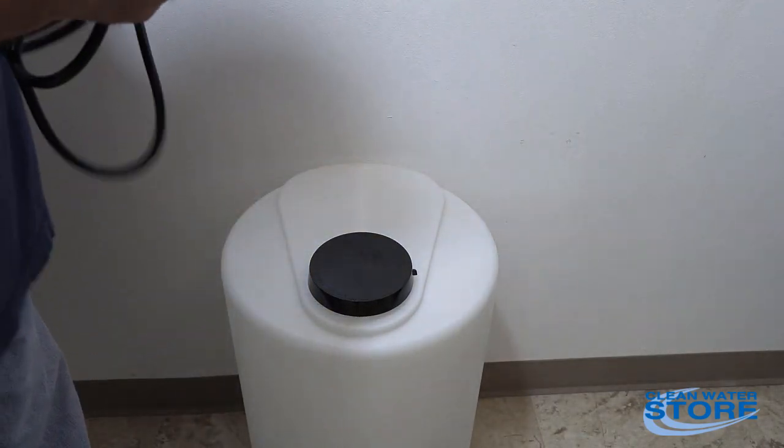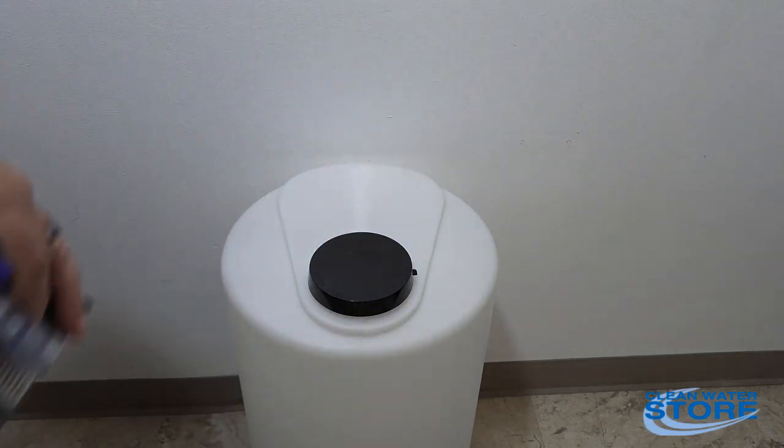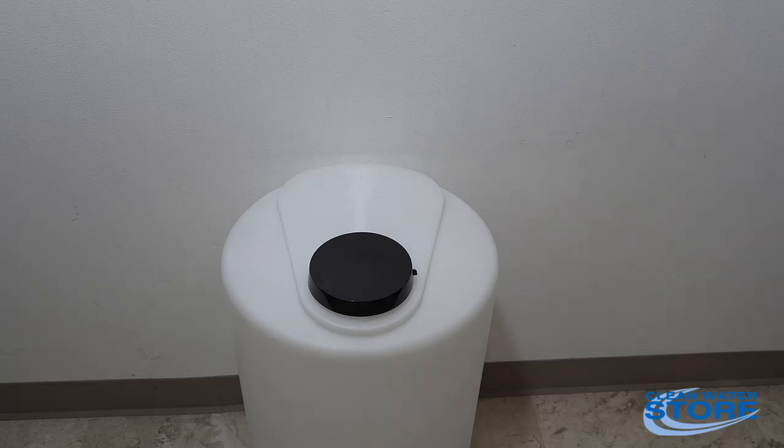The first thing we're going to do is mount the pump. We recommend mounting these pumps directly on top of the tank. The shortest distance for that suction hose coming up is better to keep your prime. You can put it on a shelf above, but you don't want it higher than 60 inches above the tank.